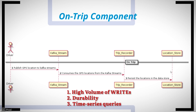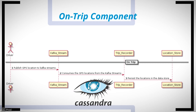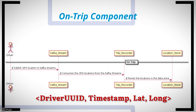The Trip Recorder writes location data to a location store — a time-series database that must support three criteria: high volumes of writes, durability, and time-series based queries such as the location of a driver within a given time range. We use Cassandra here because it is highly and linearly scalable — you can keep adding nodes to store more data — which is essential at Uber's scale. It is also decentralized, allowing distribution across different regions for performance, and it is durable so trip details are not lost due to host failures.